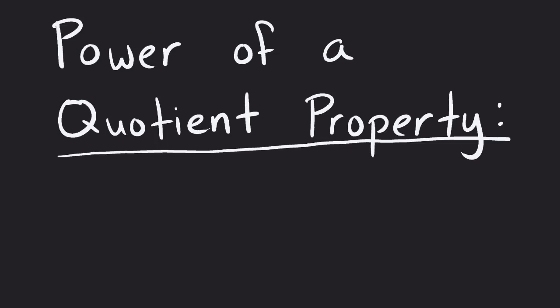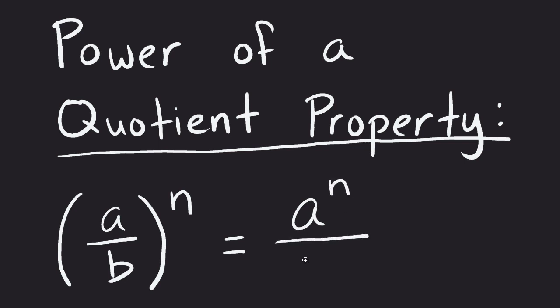The power of a quotient property says that if we have a quotient, let's say A over B, and we raise it to a power n, that power would distribute out and be put into both numerator and denominator. So this property says we'll take the numerator and raise that to the n, and take the denominator and raise that to the n, and then once we get an answer, we could simplify or divide if necessary.